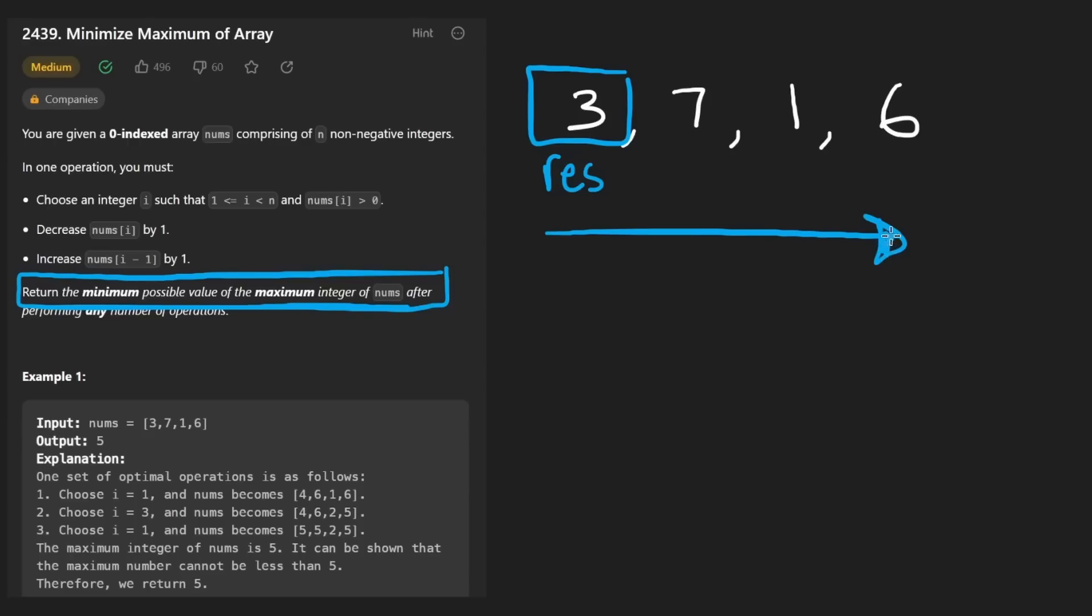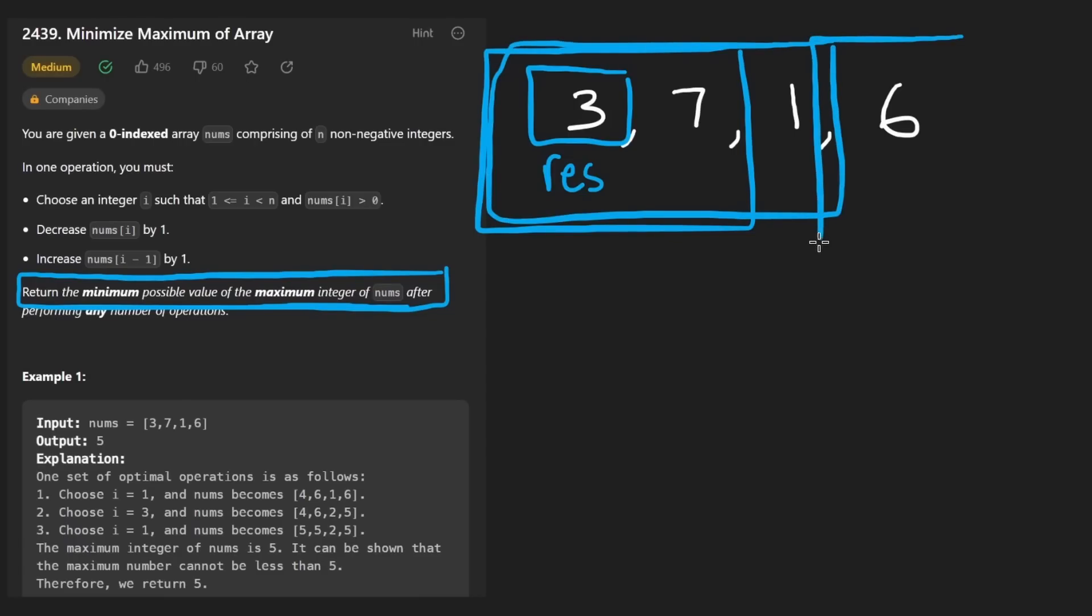The reason we're going to start from left to right, one, is because that's what we usually do, but also because we're kind of thinking of it in terms of sub problems. What is the result of this subarray? What's the minimize maximum of this subarray? And then we can expand that. What's the result of this subarray? And kind of keep expanding that just by adding a single value.